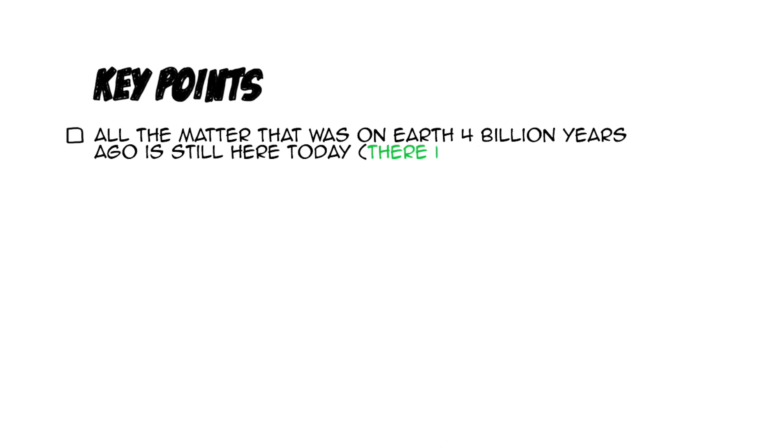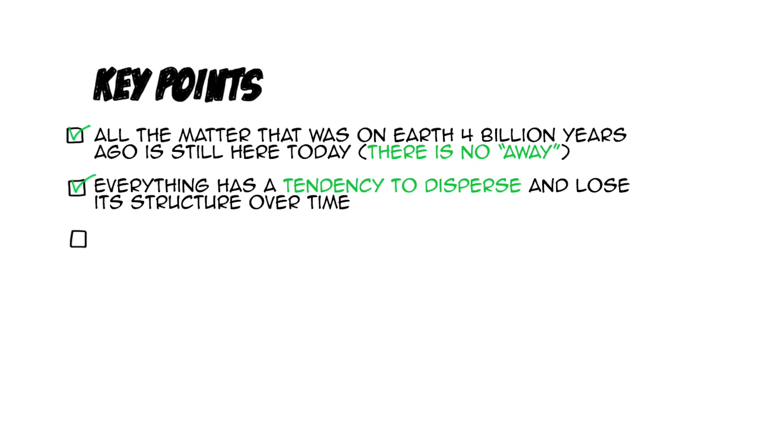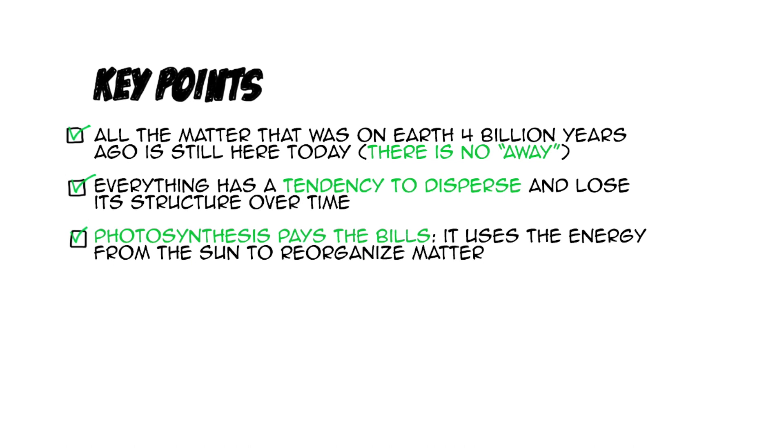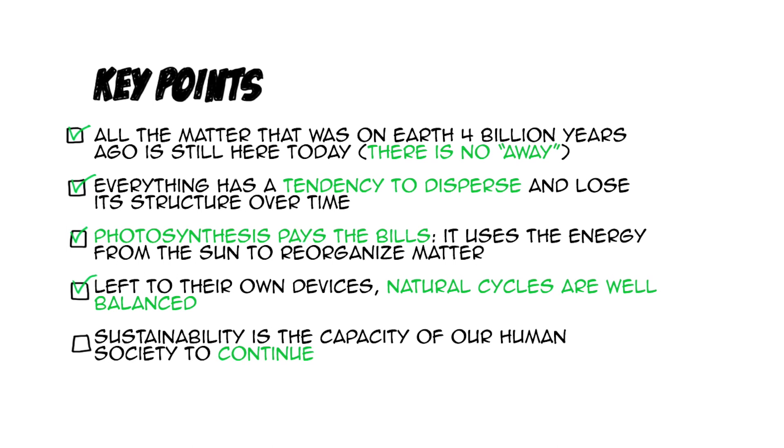Before moving to the next one, here are the key points to keep in mind. All the matter that was on earth 4 billion years ago is still here today. There is no way. Everything has a tendency to disperse and lose its structure over time. Photosynthesis pays the bills. It uses the energy from the sun to reorganize matter. Left to their own device, natural cycles are well balanced. And sustainability is the capacity of our human society to continue indefinitely within the natural cycles. So I hope this is helpful. Please subscribe if you like the content. And thank you for watching.